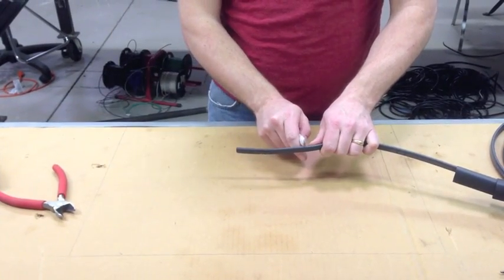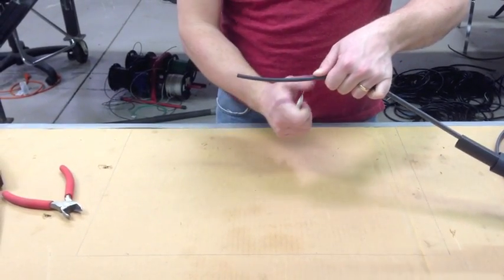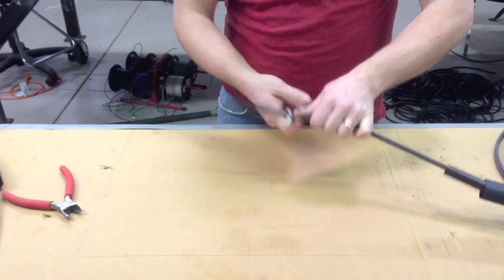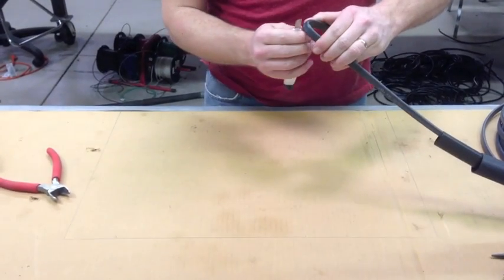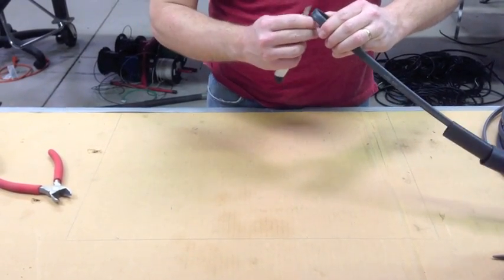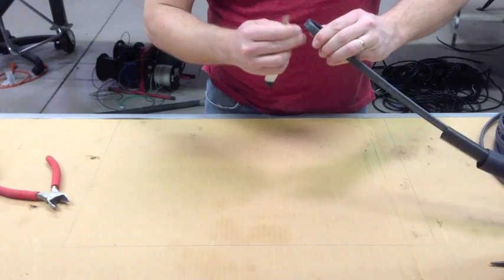Now take your heat cable and score all the way around the cable about 4 inches from the end. Make sure not to cut too deep in order to miss the braid wire.